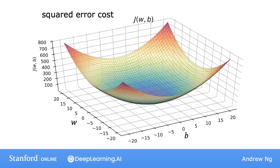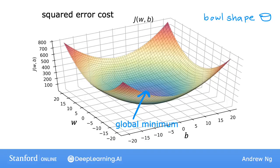But it turns out when you're using a squared error cost function with linear regression, the cost function does not and will never have multiple local minima. It has a single global minimum because of this bowl shape. The technical term for this is that this cost function is a convex function. Informally, a convex function is a bowl-shaped function and it cannot have any local minima other than the single global minimum.